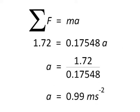Using Newton's second law, the sum of the forces equals mass times the acceleration, and using the sum of the forces as mg sine theta, we get an acceleration of 0.99 meters per second squared.